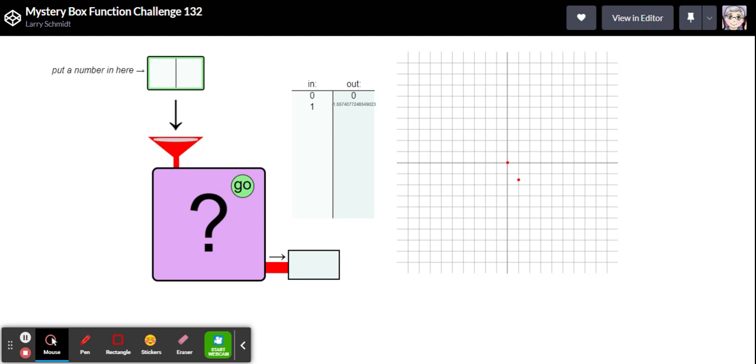Maybe this is trig. I don't know. Let's put in a two. Okay and that's way up there. Let's put in a three. Okay it goes down and up and down so it does look like it might be trig. It's a little hard to see what this is though.